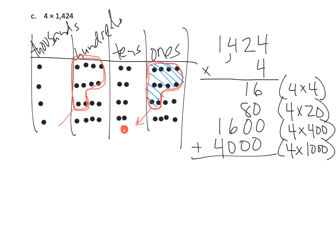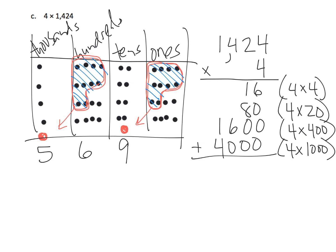But over here in our hundreds, we need to bundle — we grab these ten dots, because ten hundreds can be bundled together for a thousand. Those ten hundreds are now gone because we bundled them for a thousand. So what do we end up with? We have five thousands, six hundreds left over, nine tens, and six ones left over. So our place value chart says we should end up with five thousand six hundred ninety-six.